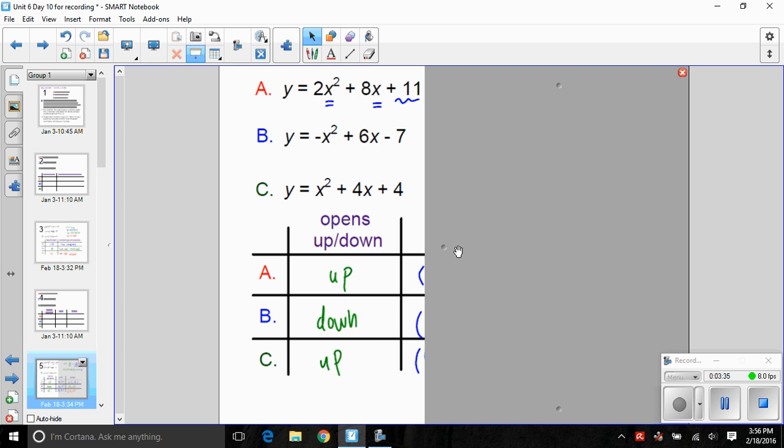Now we can tell about the y-intercept simply by looking at the value of c. Remember the y-intercept is always the value of y when x equals zero. If we were to plug in zero for x, we can see the value of y is just 11. So for equation A, zero, 11 is the y-intercept. Equation B, zero, negative seven is the y-intercept. And lastly, equation C, zero, four is the y-intercept.